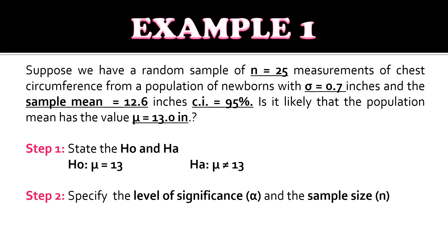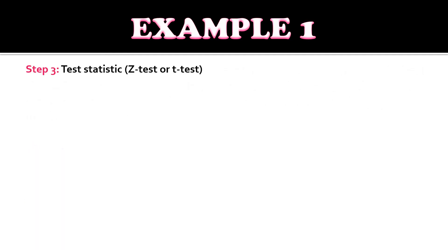For step two, we specify the level of significance and the sample size. Since the confidence interval is 95%, the level of significance is 0.05, and the sample size is 25. For step three, we identify the test statistic. Although the sample size is 25, the problem gives us the population standard deviation, so the test statistic we will use is the Z-test for a two-tailed test.